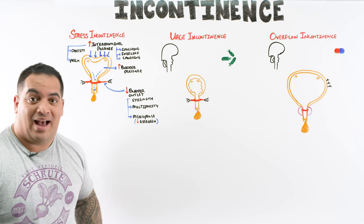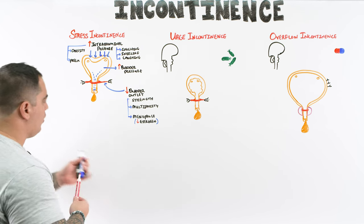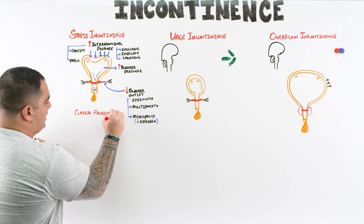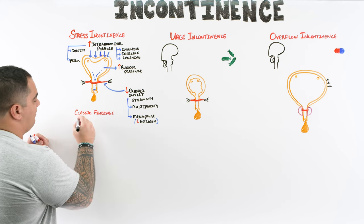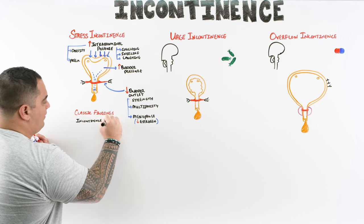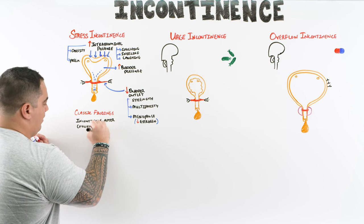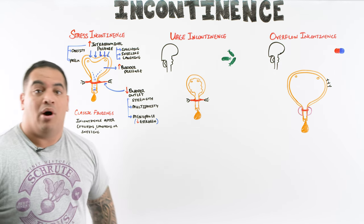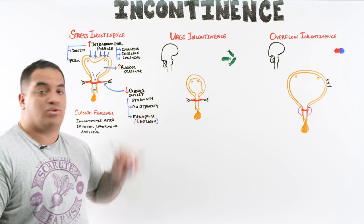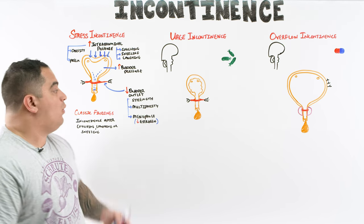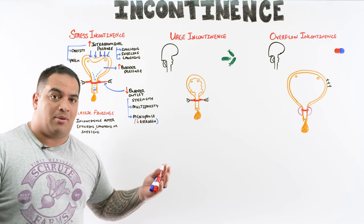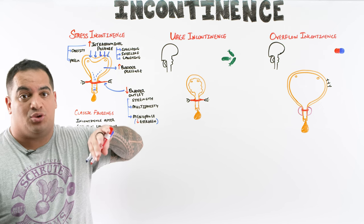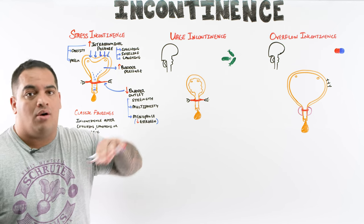The classic finding for stress incontinence is that the patient has incontinence after coughing, laughing, or sneezing. Review their history: are they obese, pregnant, post-menopausal, or multiparous? These historical features explain the pathophysiology — increased intra-abdominal pressure from coughing/laughing/sneezing combined with obesity or pregnancy, plus decreased bladder outlet strength from multiparity or low estrogen levels.